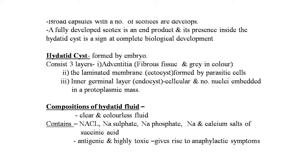The hydatid cyst formed by the embryo consists of three layers: the adventitia, the laminated membrane, and the inner germinal layer. The adventitia is fibrous tissue, gray in color. The laminated membrane (ectocyst) is formed by parasitic cells. The inner germinal layer (endocyst) is cellular, with nuclei embedded in a protoplasmic mass.